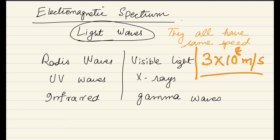So now we will discuss which one has the maximum wavelength, which one has the minimum wavelength, which one has the maximum frequency, and which has the minimum frequency. And also we will discuss their applications and their uses — where these waves are used and how we use them. And in the end we will also discuss the damage caused by the electromagnetic radiations.